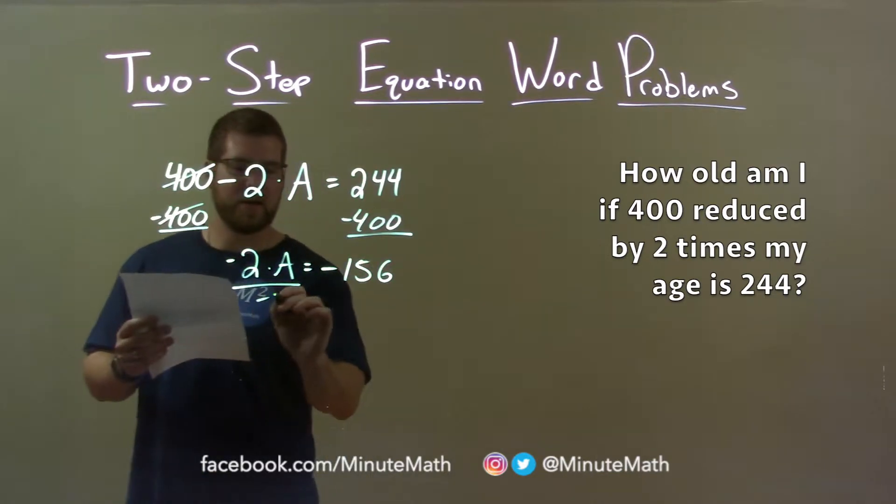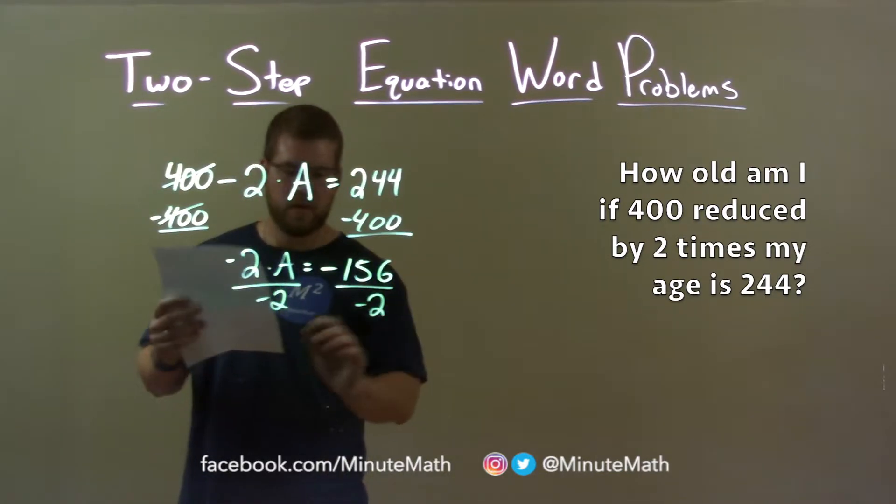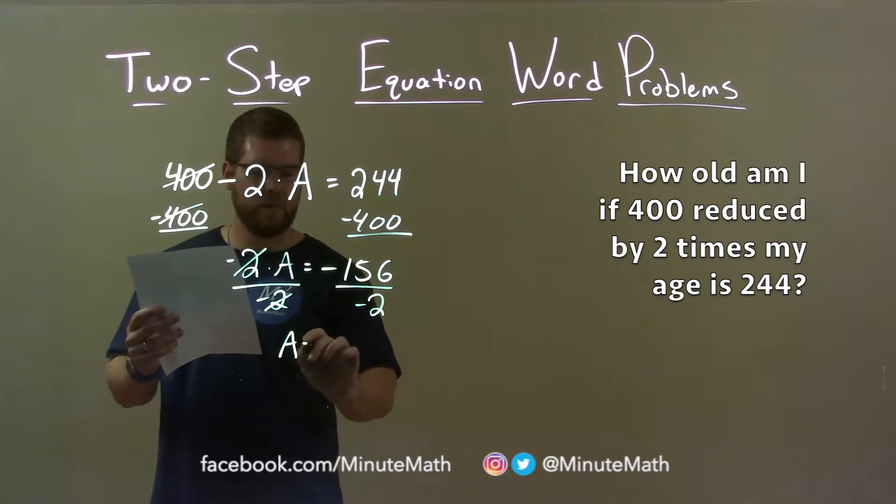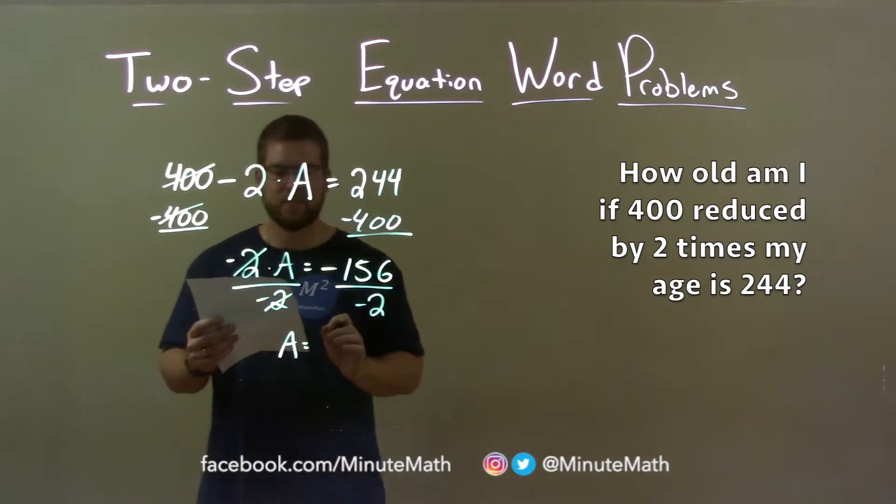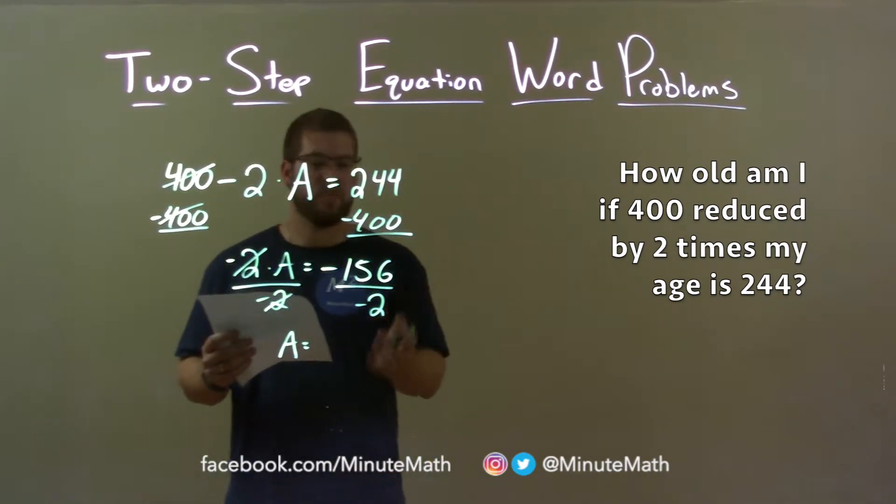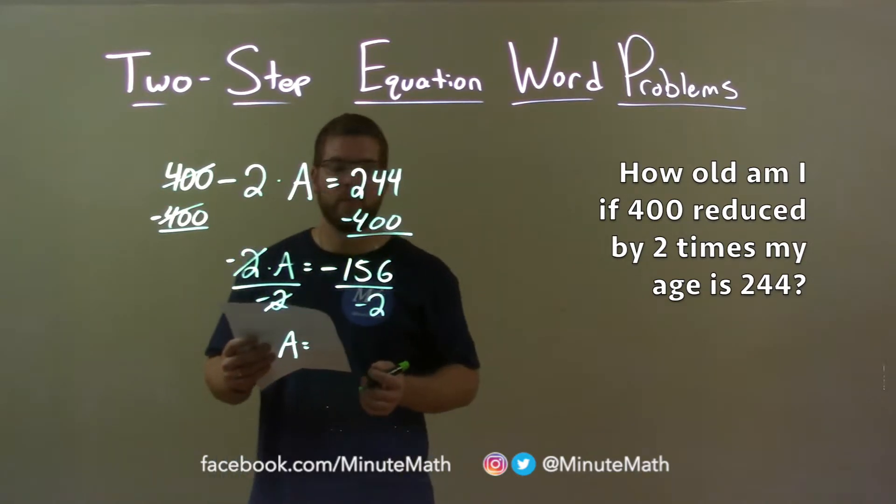From there I divide by negative 2. The negative 2s cancel, leaving A by itself, my age. A negative divided by a negative is a positive, and 156 divided by 2 is 78.